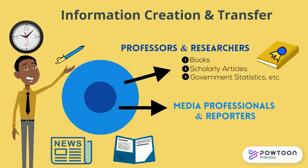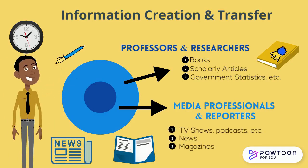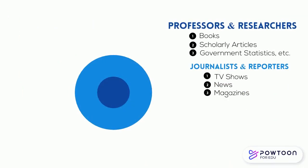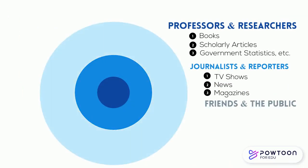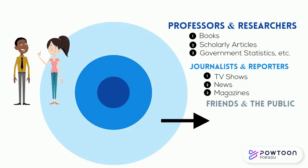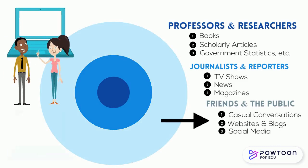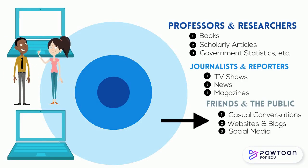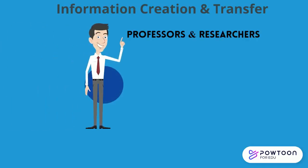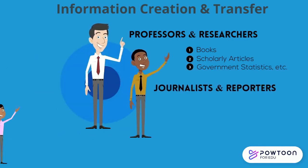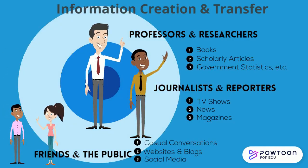Media professionals repackage what may be scholarly and technical information into a user-friendly format, which you may find via a podcast, news report, or website. The final stage in a successful transfer of information is that the general public stays informed in order to share accurate information in their conversations and on social media. However, there has been a breakdown in this process, and people don't often consider the credibility of the people they allow to inform them. Whether you are consuming information from scholarly publications, as represented in the middle of the bullseye, or from a media professional or a friend, always ask: what is the expertise and potential bias of the person creating or passing along the information?